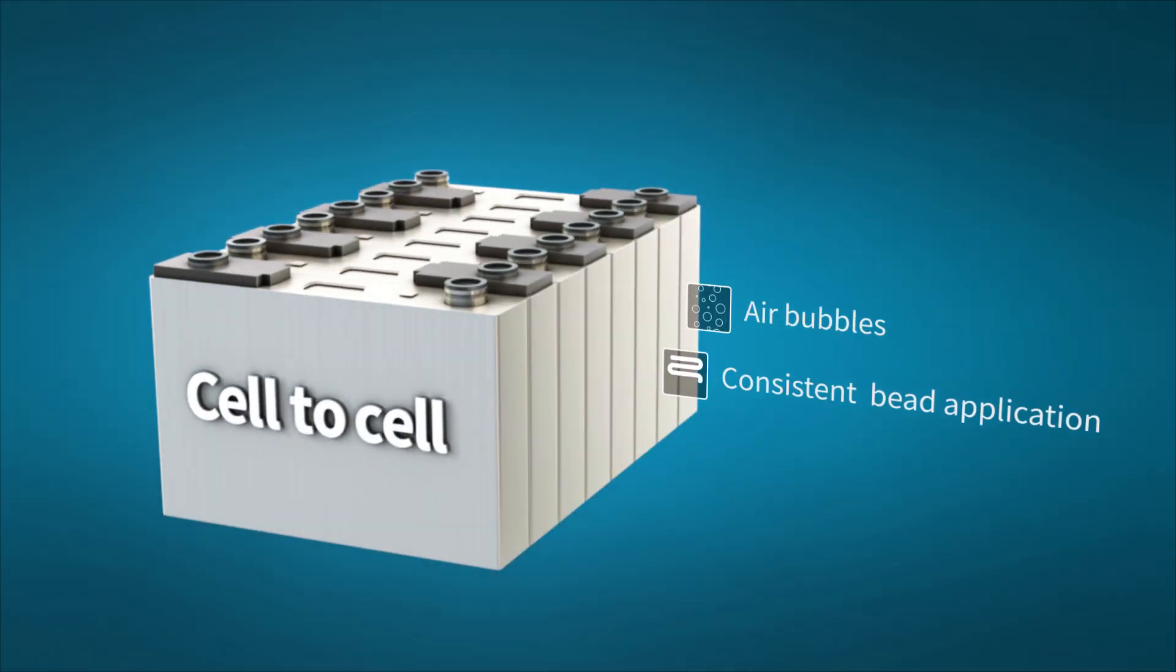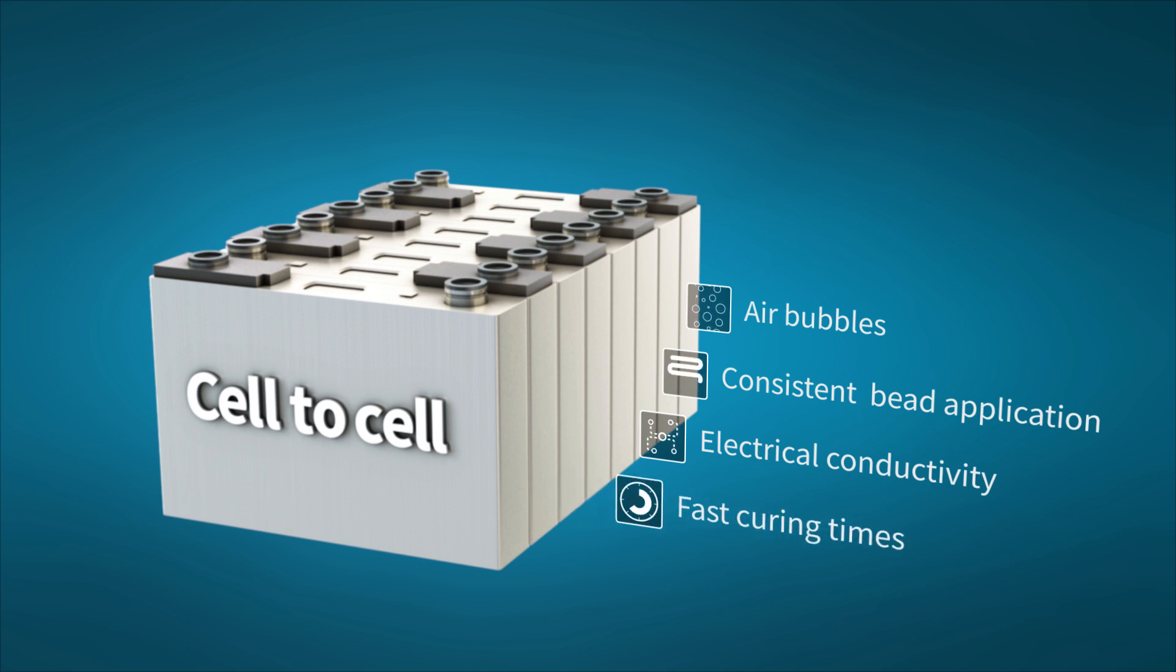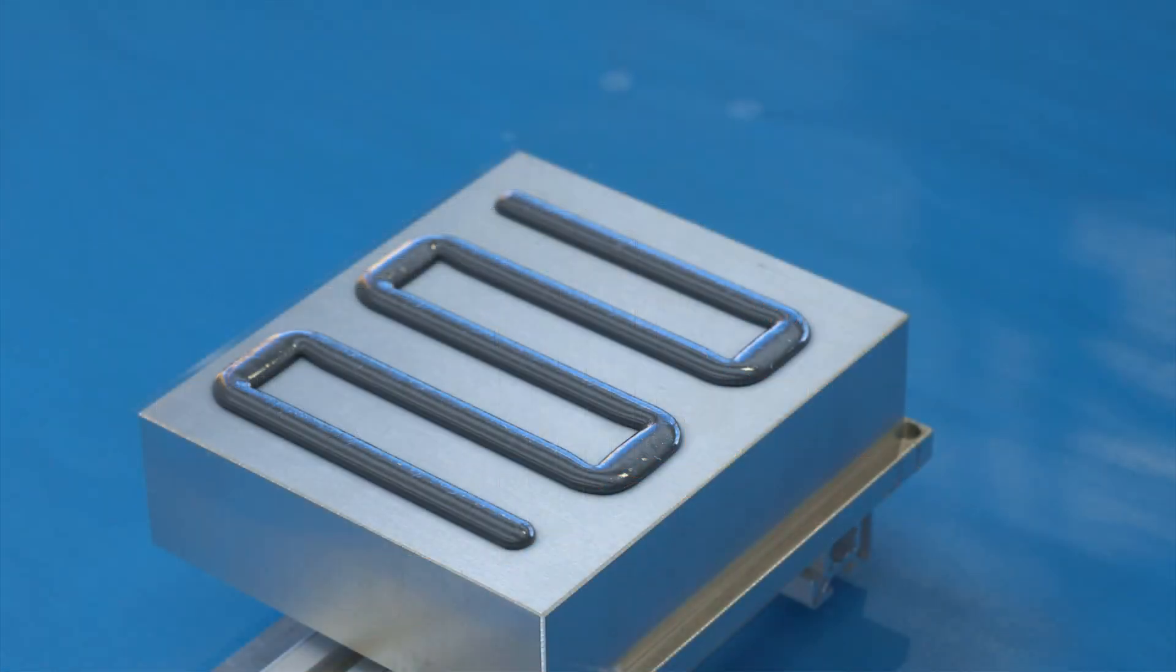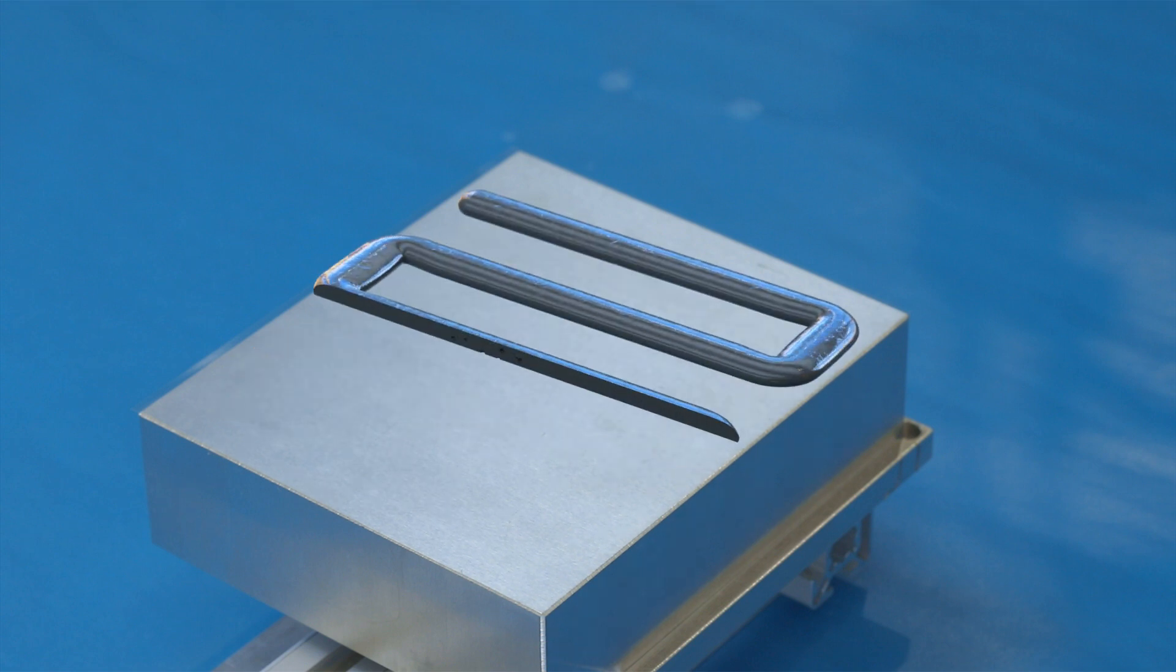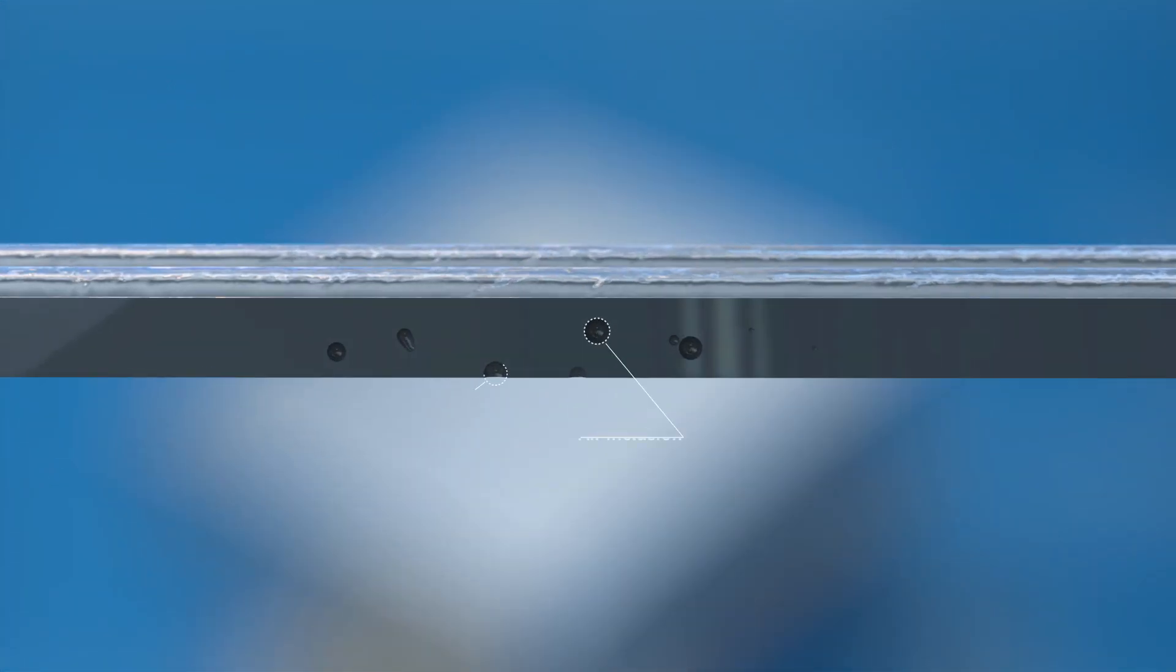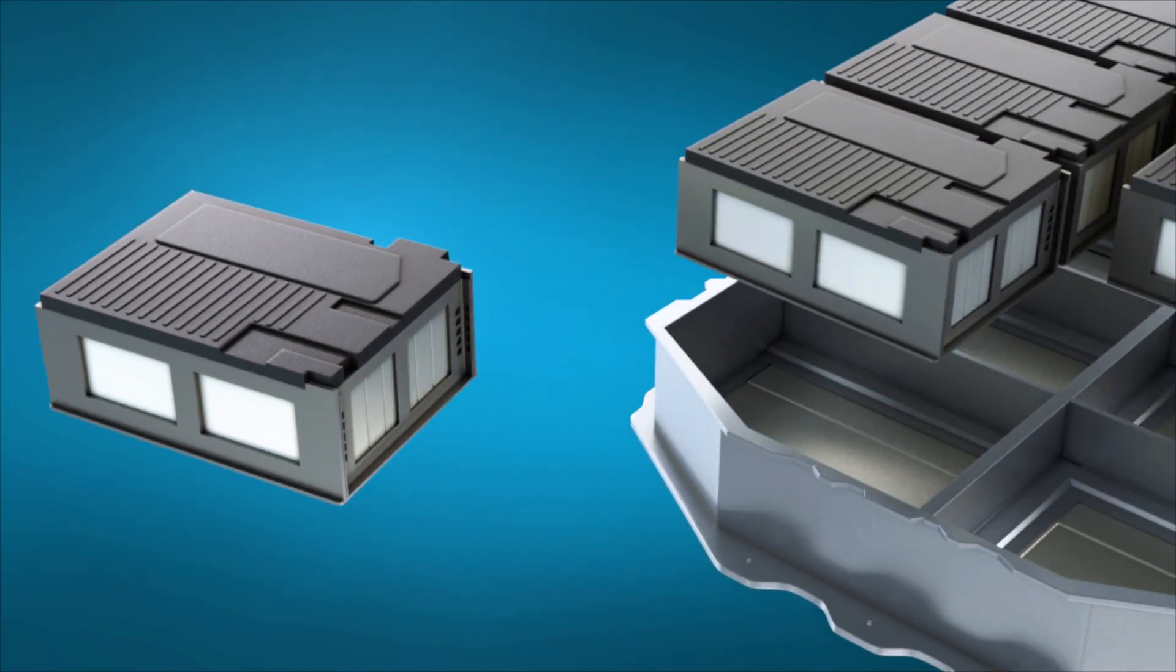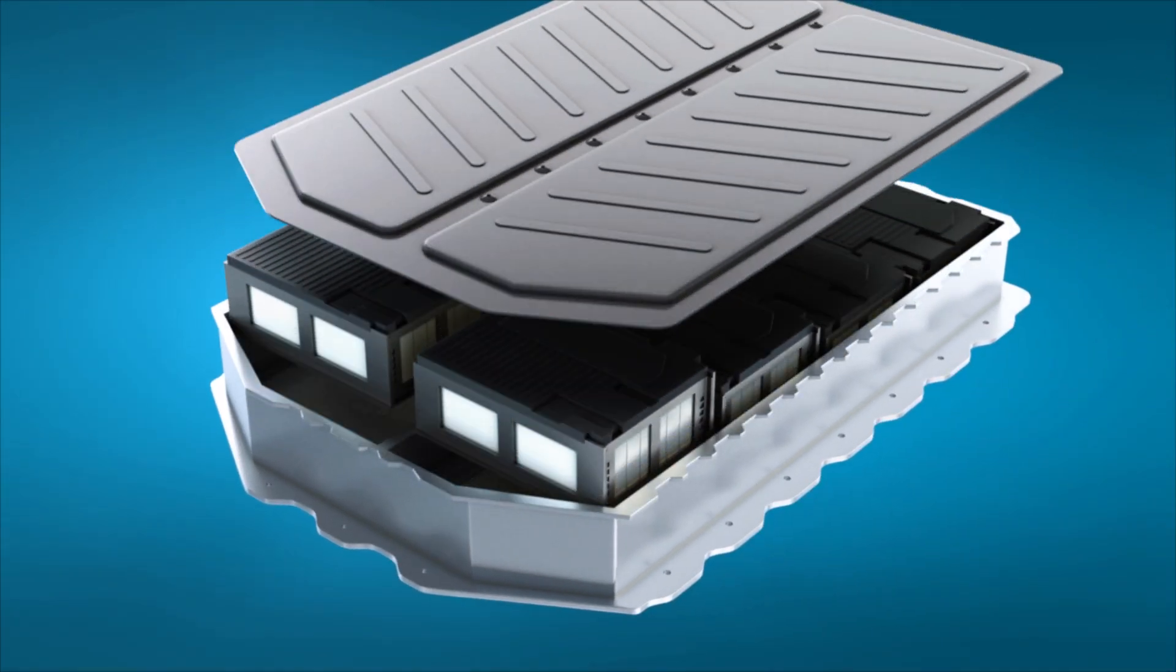This process comes with some major challenges. Air inclusions, for instance, can lead to an insufficient joining between the cells. A secure electric insulation is a must to avoid short circuits which can damage the vulnerable cells.